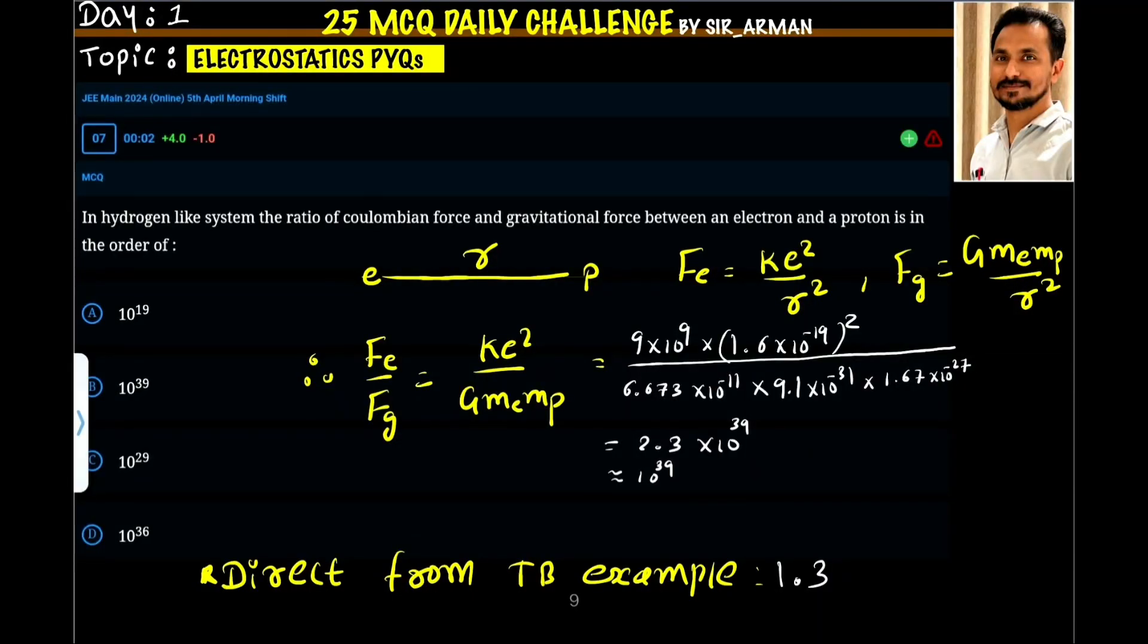In hydrogen-like system, the ratio of the Coulomb force and the gravitational force between an electron and a proton is? It's a very easy question. It is from the textbook example 1.3 as per the new syllabus.